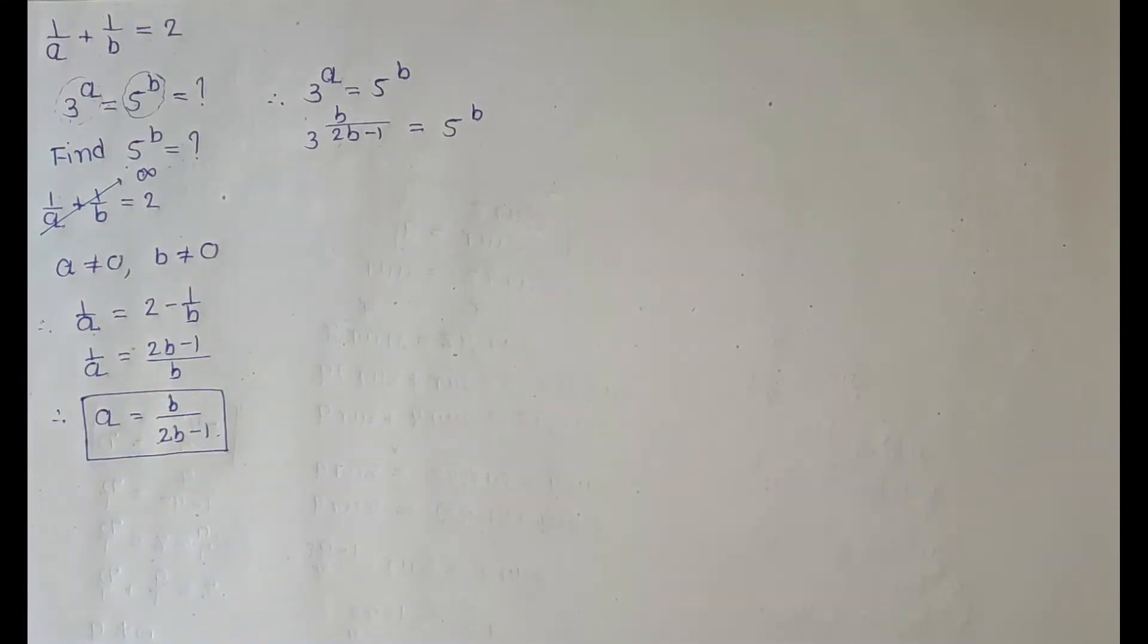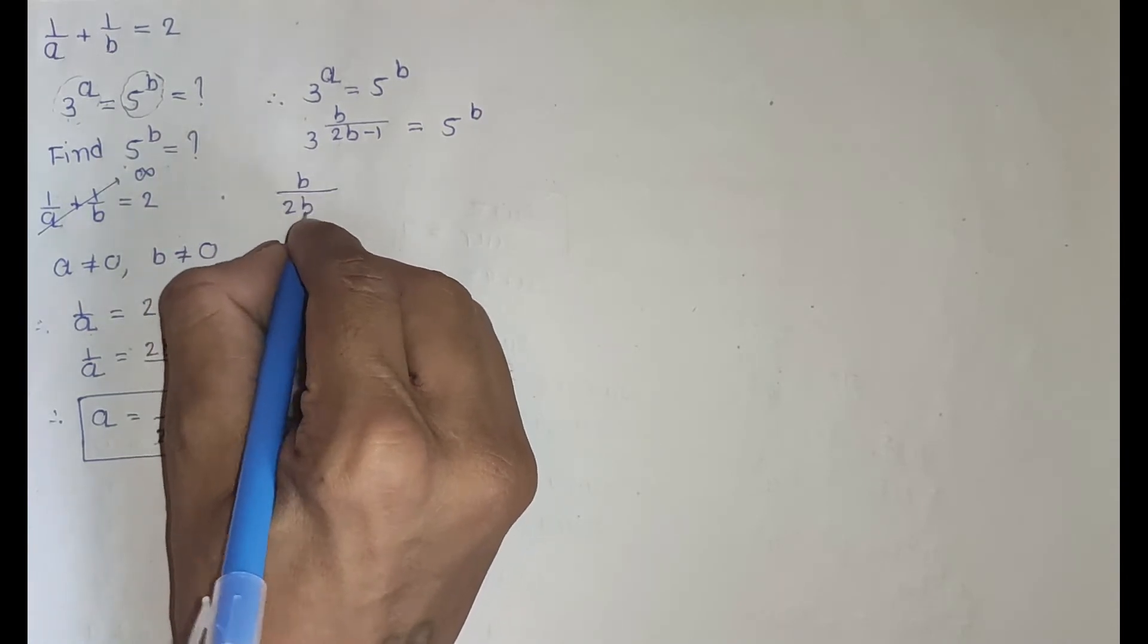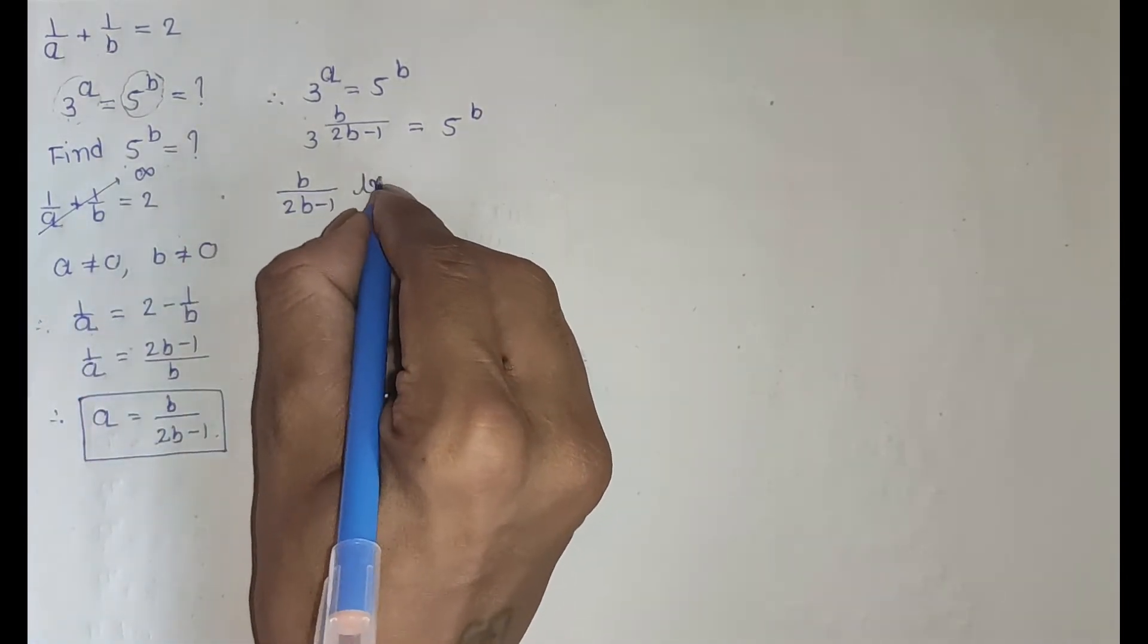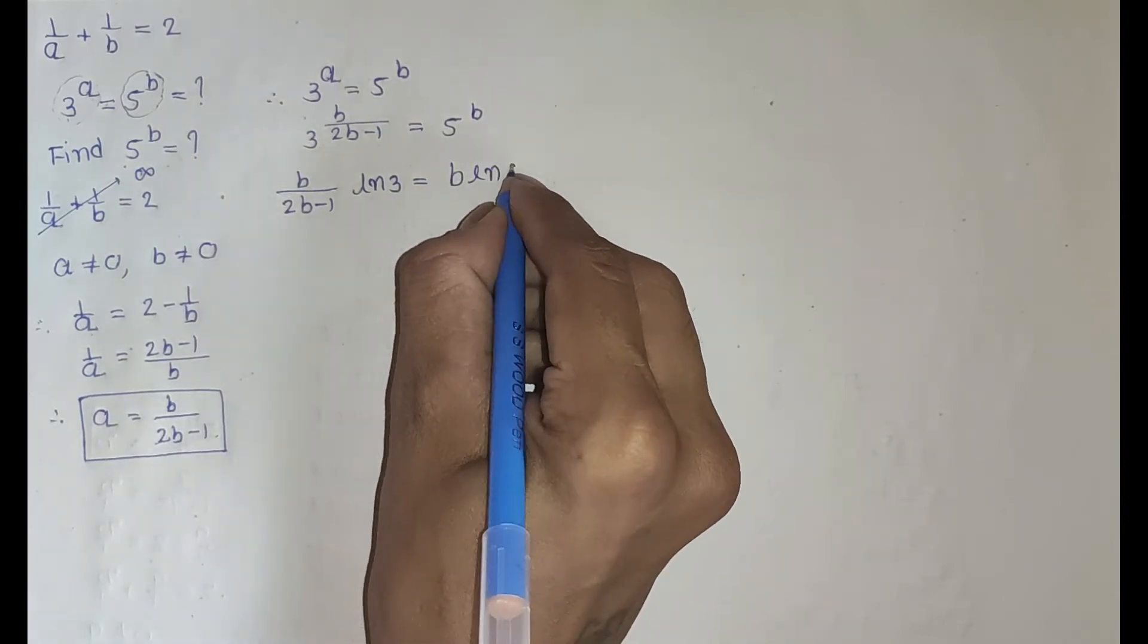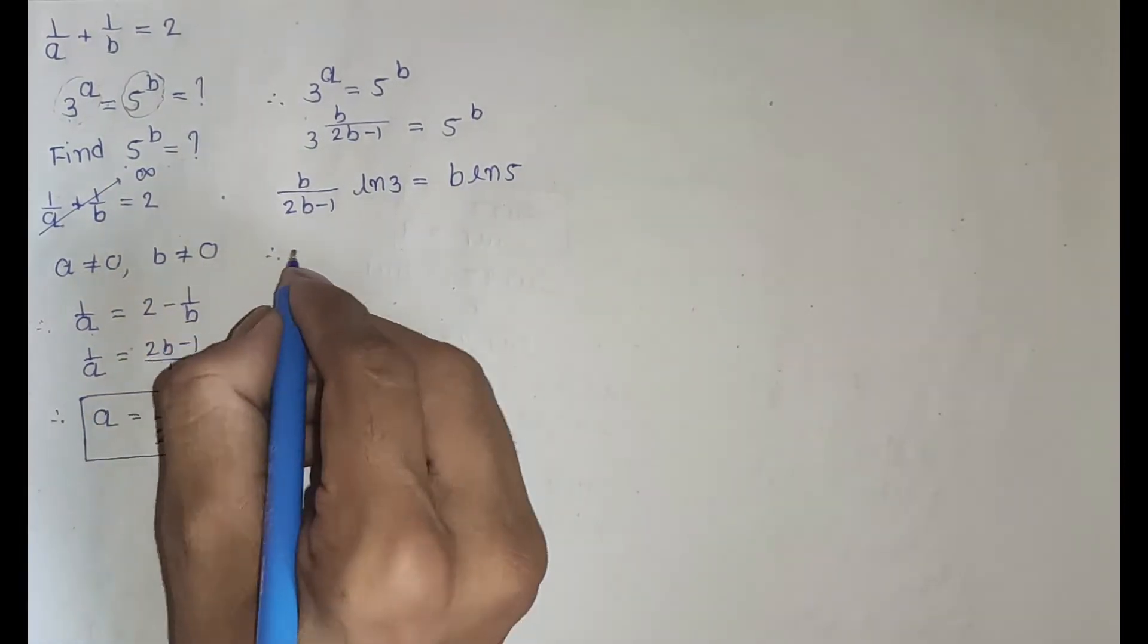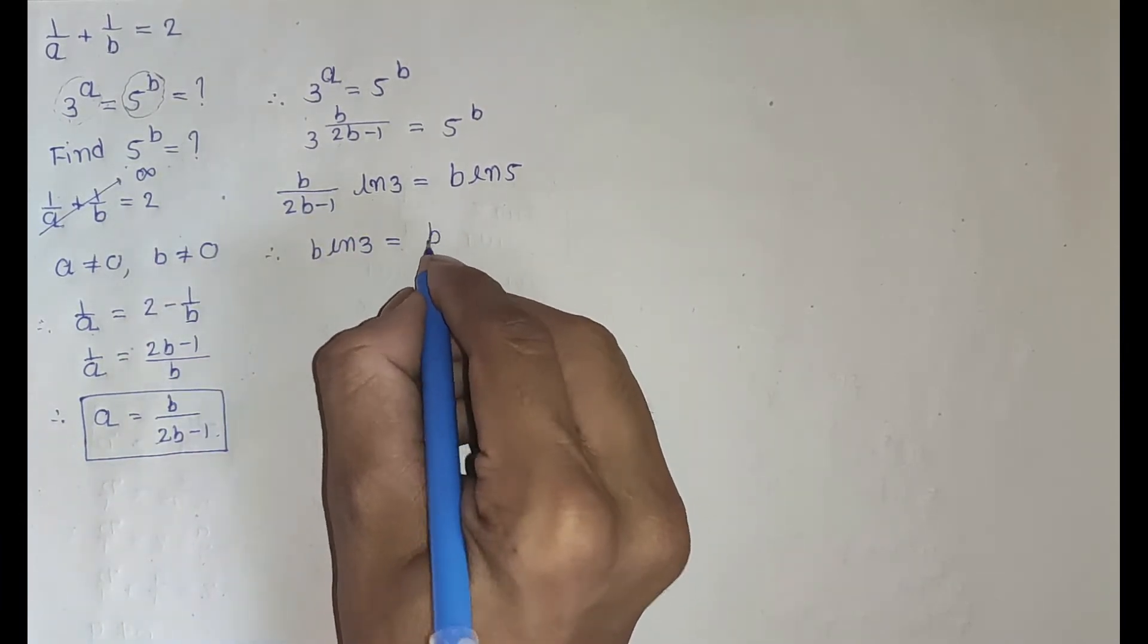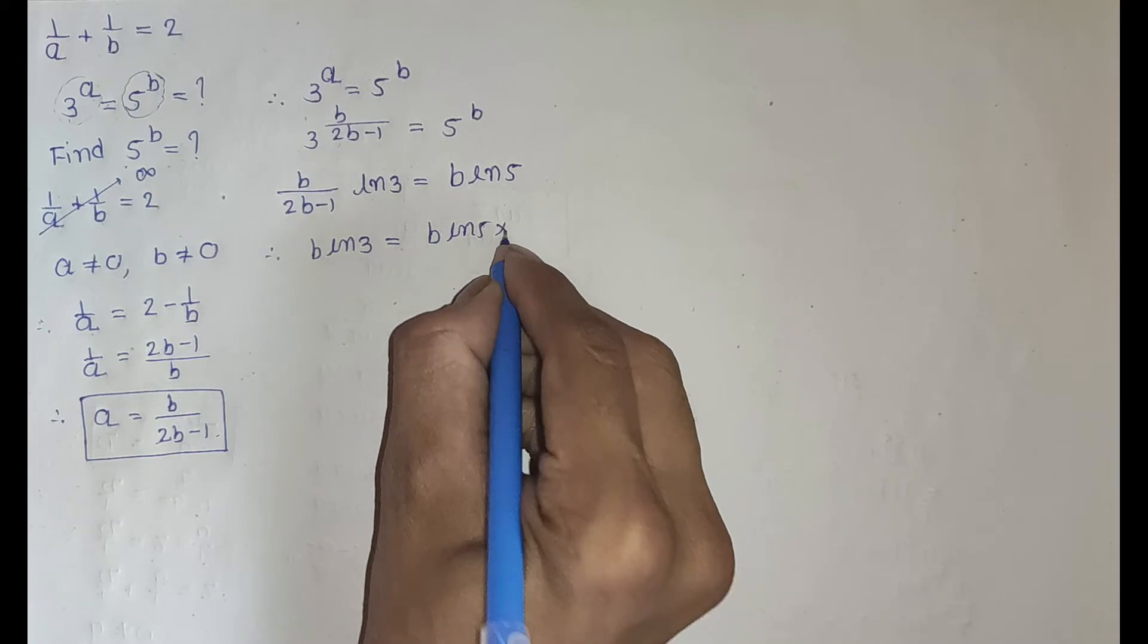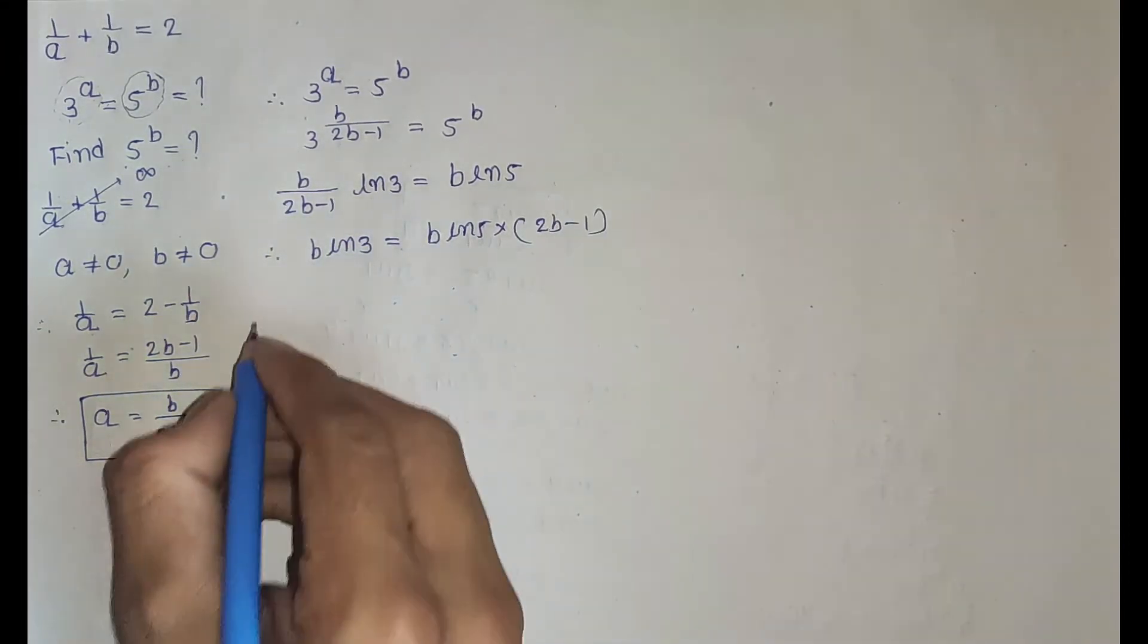Take natural logarithm both sides and we get b divided by 2b minus 1 times ln 3 equal to b ln 5. Now b ln 3 equal to 2b minus 1 times b ln 5.